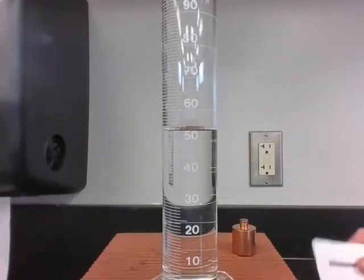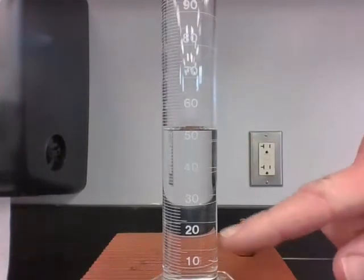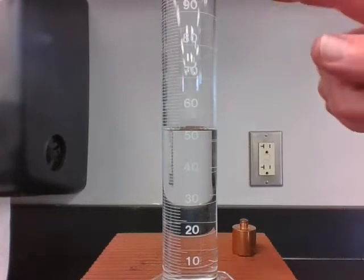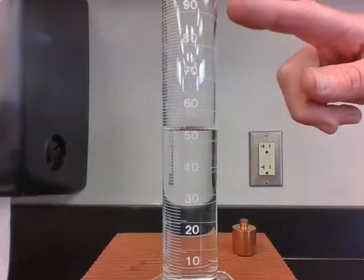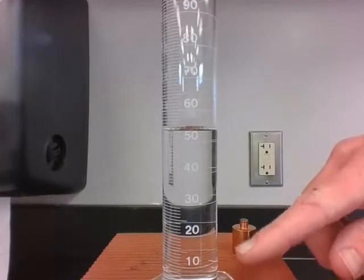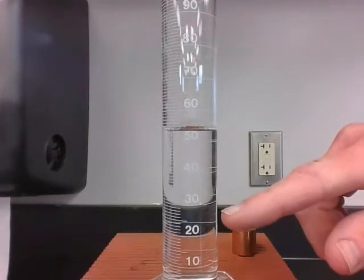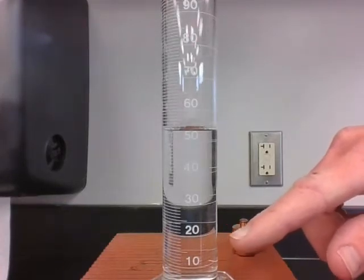When we first pick up and look at a graduated cylinder, we should check what the increments are. This one goes up to 100 milliliters and starts at zero. Every major line is 10, and there are nine separating incremental lines between them, so these lines go by ones.